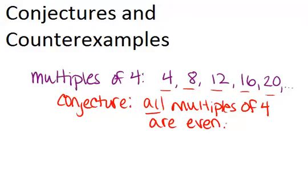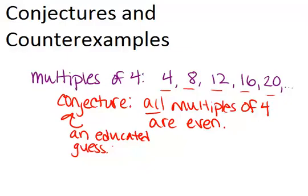So what did you do? You made an educated guess based on examples. So that's what a conjecture is. It's an educated guess based on some specific examples that you've seen. And a conjecture is something that has not yet been proven true.